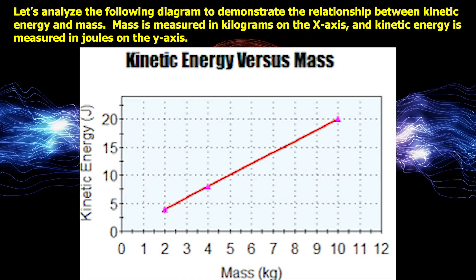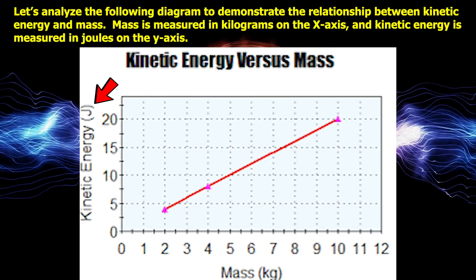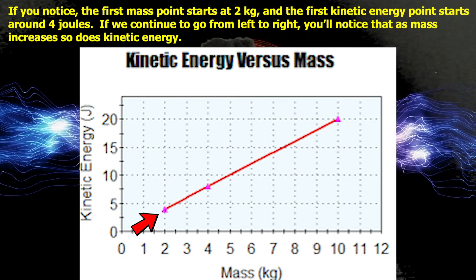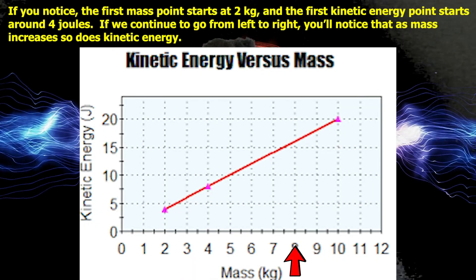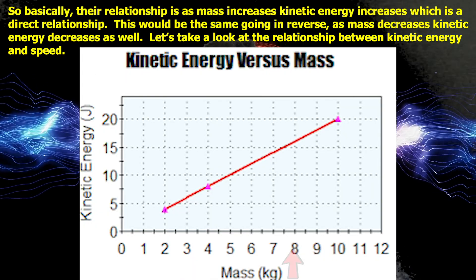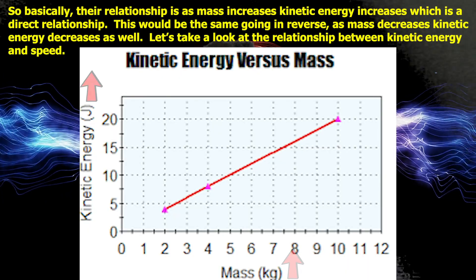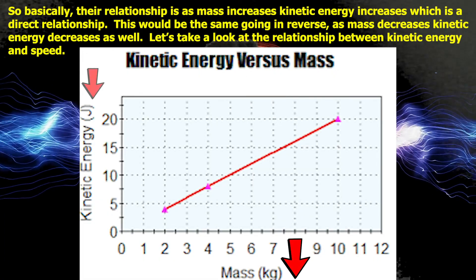Let's analyze the following diagram to demonstrate the relationship between kinetic energy and mass. Mass is measured in kilograms on the x-axis and kinetic energy is measured in joules on the y-axis. The first mass point starts at 2 kilograms and the first kinetic energy point starts at 4 joules. As we go from left to right, you'll notice that as mass increases, so does kinetic energy — this is a direct relationship. The same is true in reverse: as mass decreases, kinetic energy decreases as well.